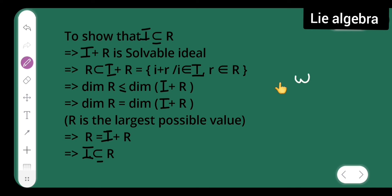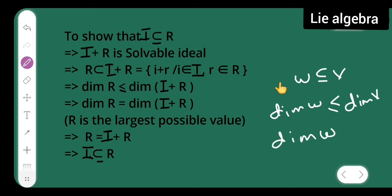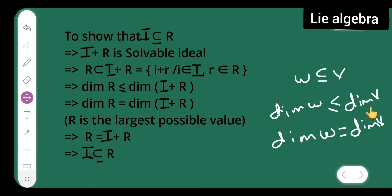If W is a subset of V, then dimension of W is less than or equal to dimension of V. When dimension of W equals dimension of V, we conclude W = V. Similarly here, dimension of r is less than or equal to dimension of i + r, and since r has the largest possible dimension, this implies dimension of r equals dimension of i + r.